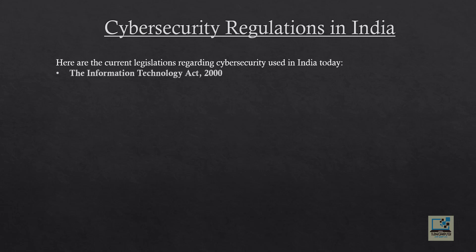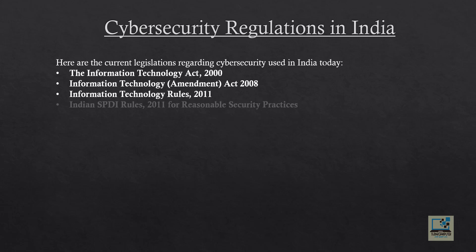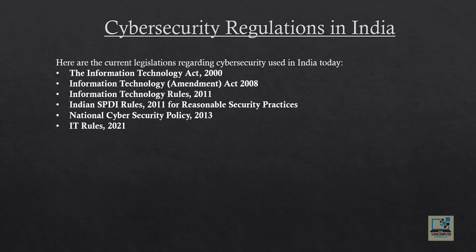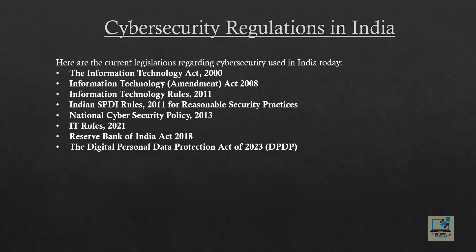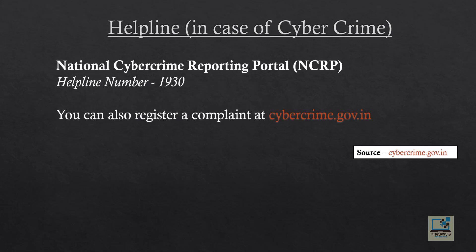Cyber security regulations in India include: the Information Technology Act 2000, IT Amendment Act 2008, IT Rules 2011, Indian SPDI Rules 2011 for reasonable security practices, National Cyber Security Policy 2013, IT Rules 2021, Reserve Bank of India Act 2018, and the Digital Personal Data Protection Act 2023 (DPDP). The helpline for cyber crime is the National Cyber Crime Reporting Portal (NCRP) — helpline number 1930 — and you can also register a complaint at cybercrime.gov.in.